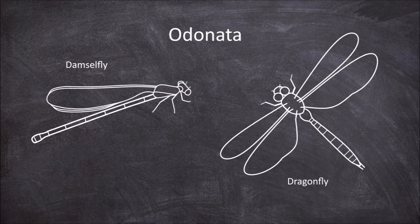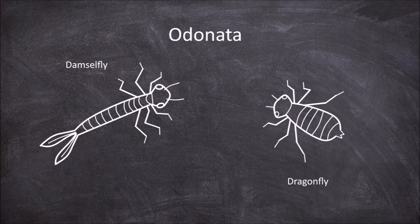In both groups the larvae grow and live in freshwater environments before coming out onto land for their final molt into their adult form. During this larval stage there is one main defining characteristic between the two groups, and that is the placement of their gills.